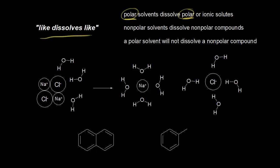A polar solvent will also dissolve an ionic solute, because you don't usually describe ionic compounds as being polar. Next, a nonpolar solvent will dissolve a nonpolar compound, so like dissolves like. But a polar solvent will not dissolve a nonpolar compound, so this would be like and unlike.